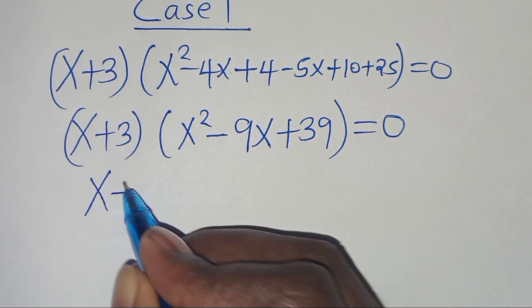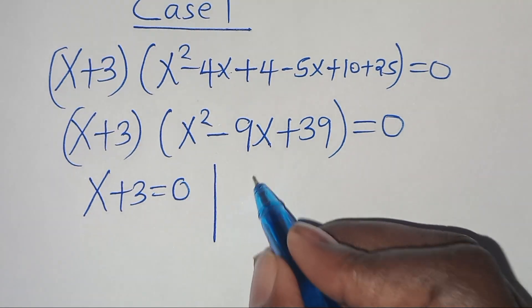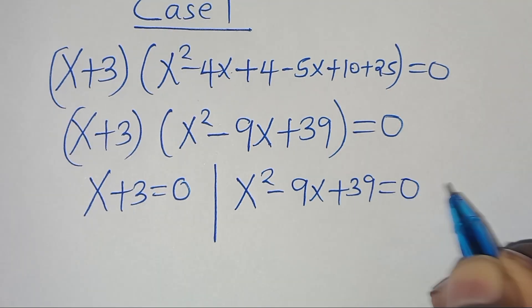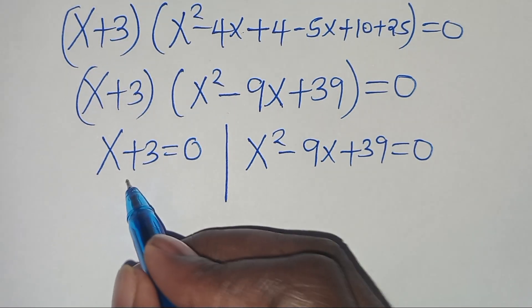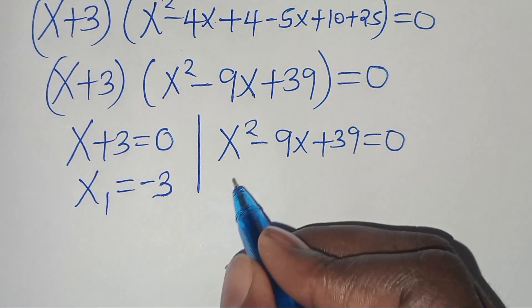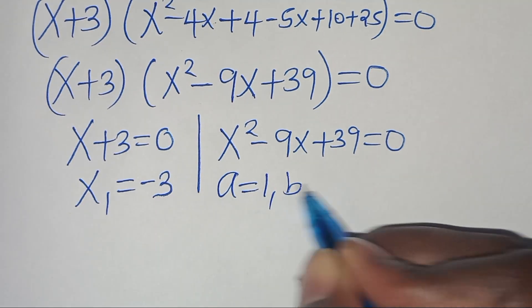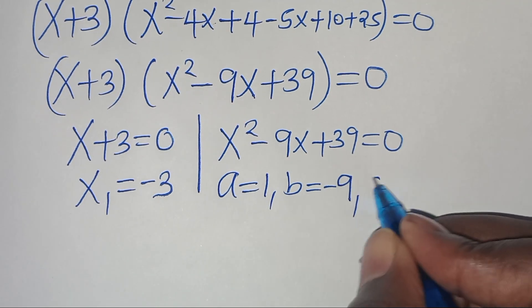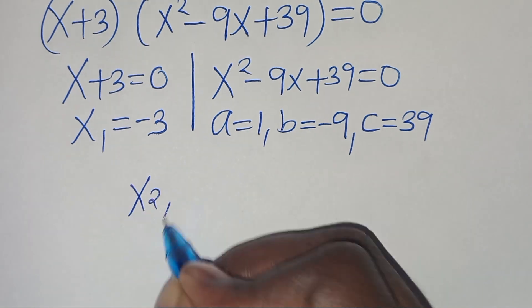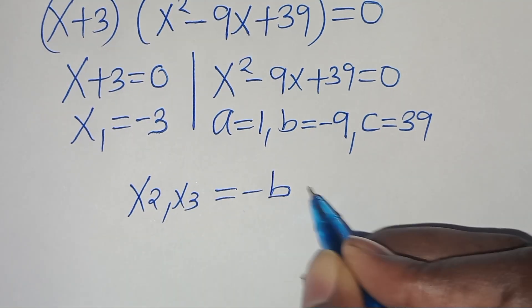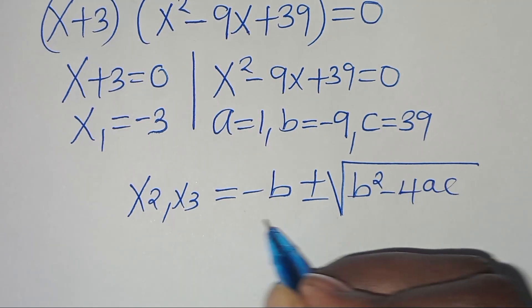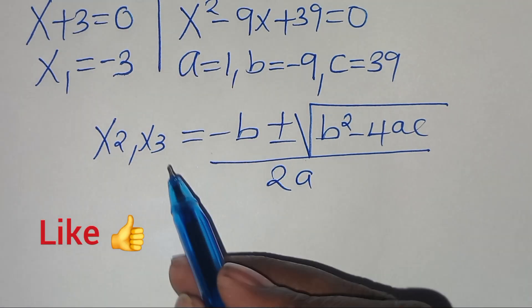We now have two parts: the first is (x plus 3) equal to 0, and the second is x squared minus 9x plus 39 equal to 0. From the first part, x₁ equals minus 3. The second part is a quadratic with a equal to 1, b equal to minus 9, and c equal to 39, so we apply the quadratic formula.